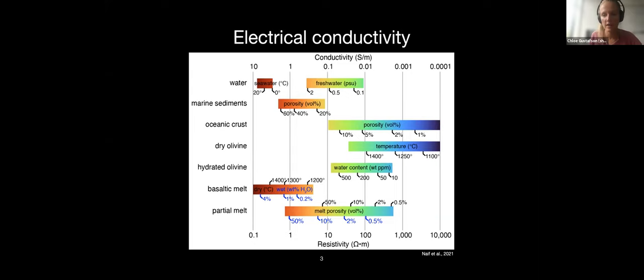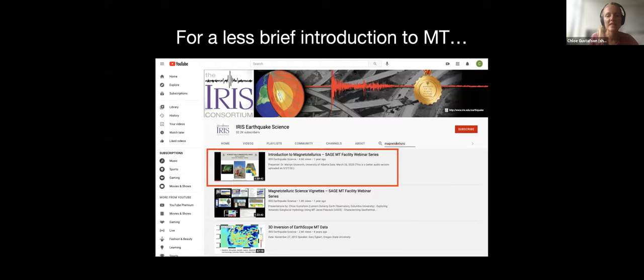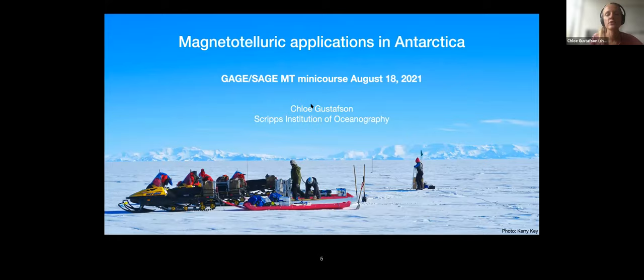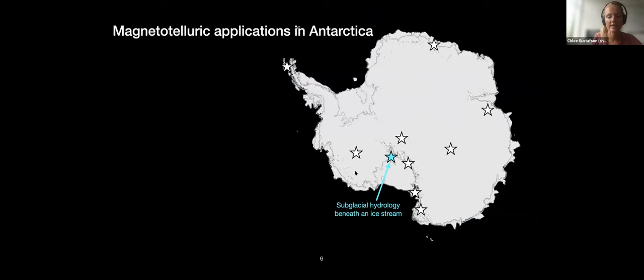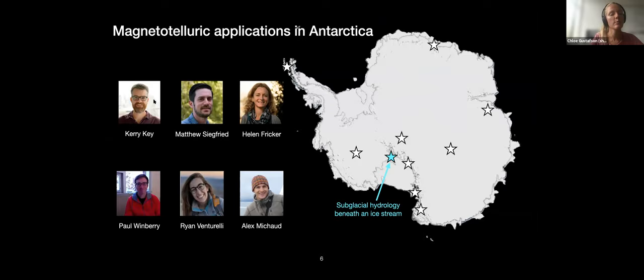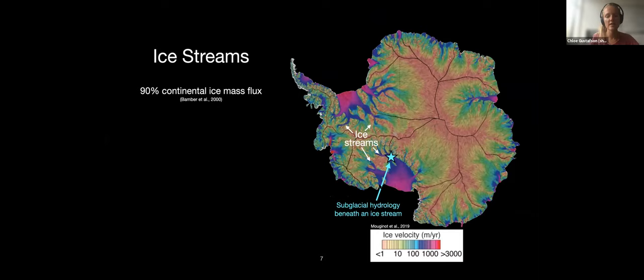That's a brief whirlwind tour of MT. For a less brief introduction, check out the introduction to magnetotellurics presented by Martin Unsworth on the IRIS YouTube channel. Getting into MT applications in Antarctica: MT has been collected in Antarctica in a handful of places. Today's vignette focuses on using MT to look at subglacial hydrology beneath an ice stream — work done for my PhD. Ice streams are concentrated regions of fast flow that deliver about 90% of continental ice from Antarctica's interior to its fringes.